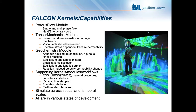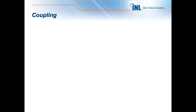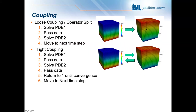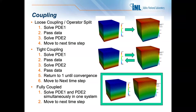Let me talk briefly about coupling and data handoffs between THM and Falcon. At the loosest level is loose coupling, or operator splitting — a Picard-type handoff where one equation system solves a piece and hands data off to the next, then moves to the next time step. Tightly coupled means multiple PDEs — say flow and transport — solved either in one code or two codes, solving one PDE, passing data to the next, and iterating back and forth. How we solve things in Falcon and the MOOSE framework by default is fully coupled and fully implicit — all PDEs solved simultaneously in one system using a Jacobian-free Newton-Krylov approach.